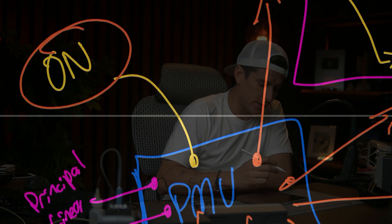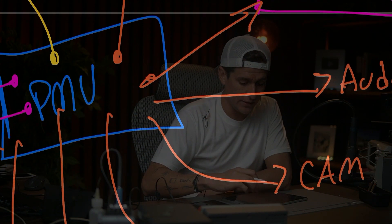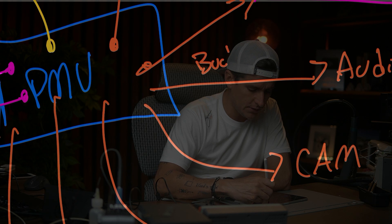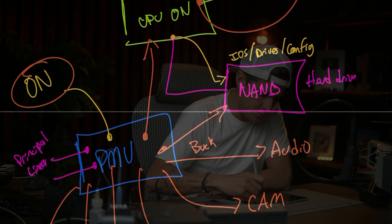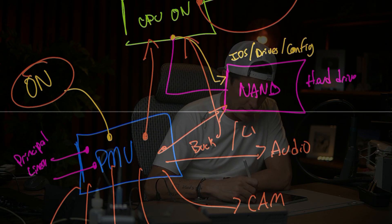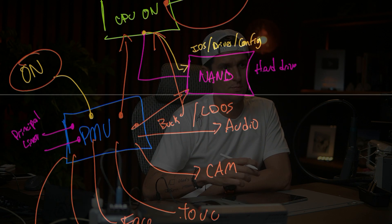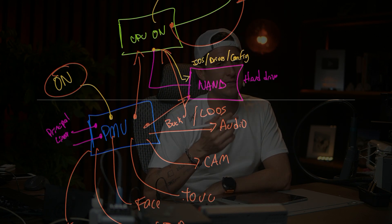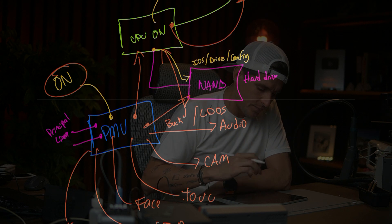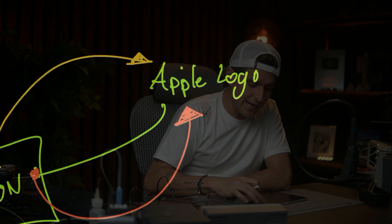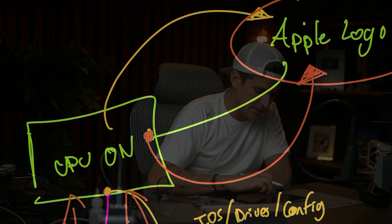You have to understand there are two stages when we connect the battery and press the power key. This line will start working — we call this line the BUCK. The BUCKs are the ones going to the CPU, and we also have LDOs, which provide power to other FPC connectors and circuits.